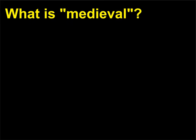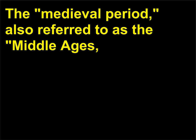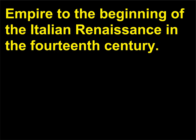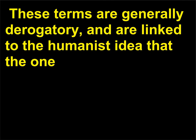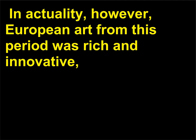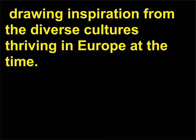What is medieval? The medieval period, also referred to as the Middle Ages, is the name given to the period of European history from the fall of the Western Roman Empire to the beginning of the Italian Renaissance in the 14th century. These terms are generally derogatory and are linked to the humanist idea that the one thousand years between the classical age and the Renaissance were somehow dark or barbaric. In actuality, however, European art from this period was rich and innovative, drawing inspiration from the diverse cultures thriving in Europe at the time.